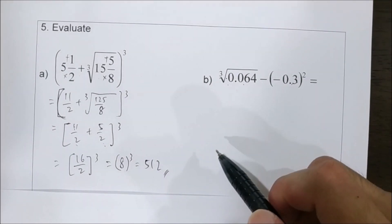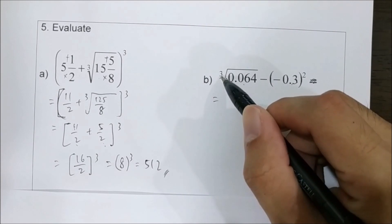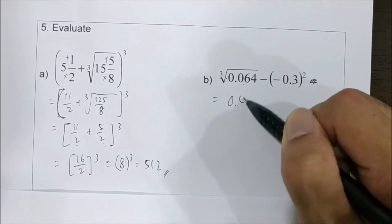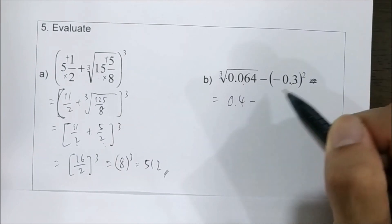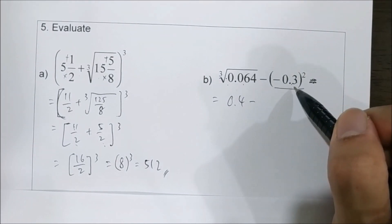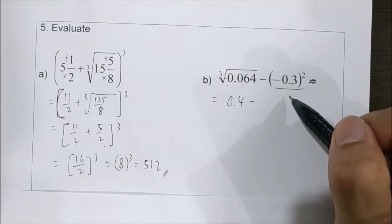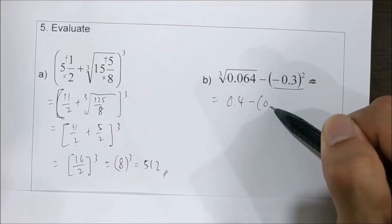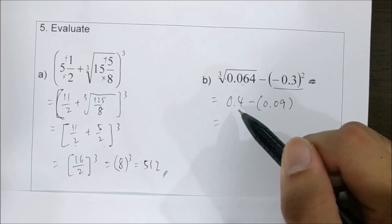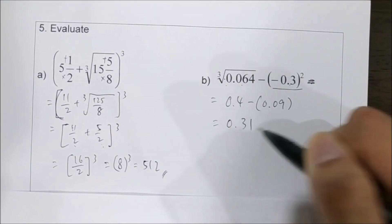For the next question, first find the cube root of 0.064, which is 0.4. Then evaluate the square of negative 0.3: negative 0.3 times negative 0.3 equals positive 0.09. So 0.4 minus 0.09 gives 0.31.